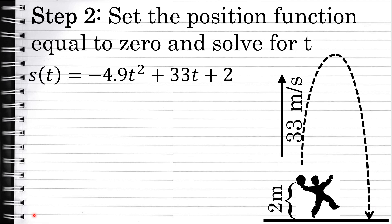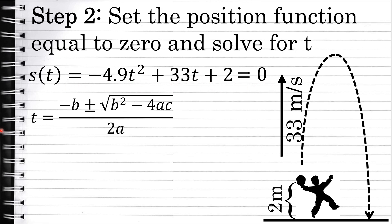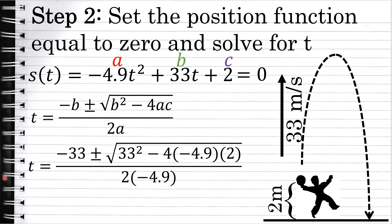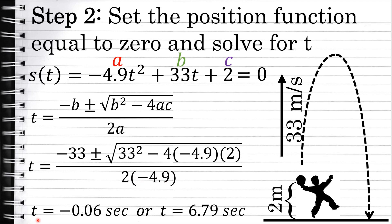Let's take our position function from step 1 and set it equal to 0. You can see we have a quadratic equation, which can be solved with the quadratic formula: t equals negative b plus or minus the square root of b squared minus 4ac, all over 2a. Here, a is negative 4.9, b is 33, and c is 2. Substituting those values yields: negative 33 plus or minus the square root of 33 squared minus 4 times negative 4.9 times 2, all over 2 times negative 4.9. Simplifying, t equals negative 0.06 seconds or t equals 6.79 seconds.